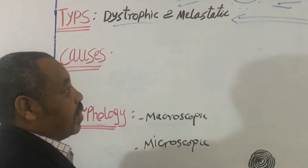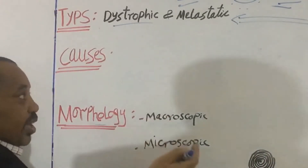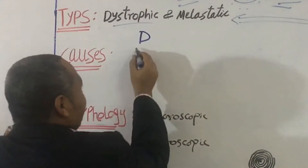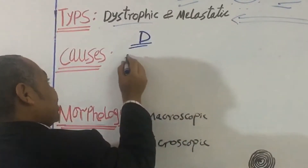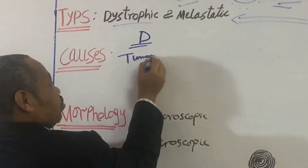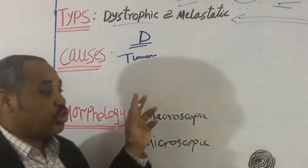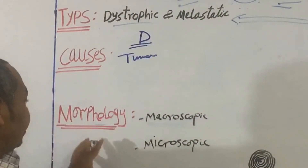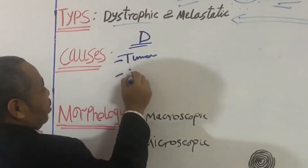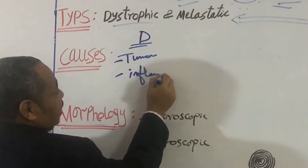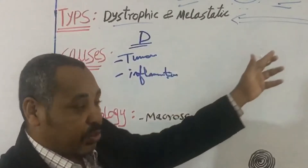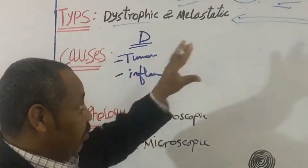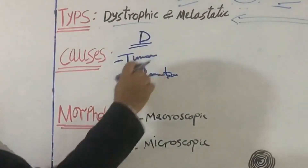Let us go over the causes in more detail. For dystrophic calcification, in addition to what we mentioned, you may find calcification in tumors — like meningiomas, papillary carcinoma of the thyroid, or ovarian carcinoma. Also, any inflammatory conditions can cause it, because inflammation involves necrosis, and sometimes granuloma formation — especially in tuberculosis. These are all causes of dystrophic calcification.